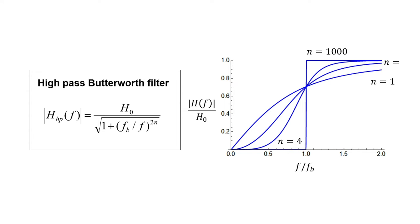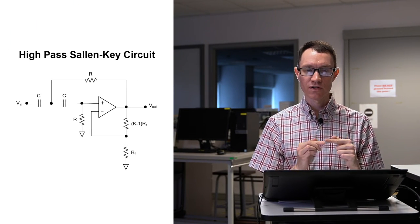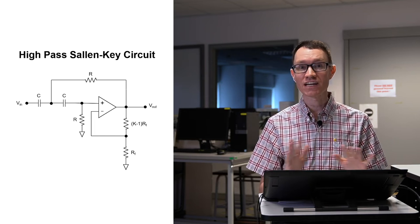The more poles we have or the greater the order of the filter, the more closely this filter looks like a perfect high-pass filter. What kind of circuit should we use to design a high-pass filter? Well, it turns out that the circuit and the design procedure for a high-pass filter are nearly identical to those of a low-pass filter. The difference in the Sallen-Key circuit is very subtle.